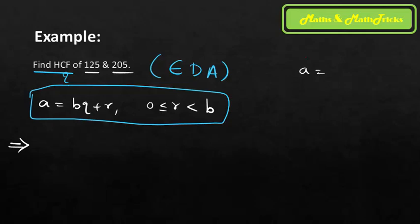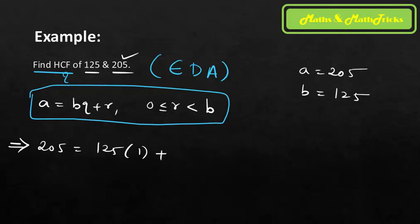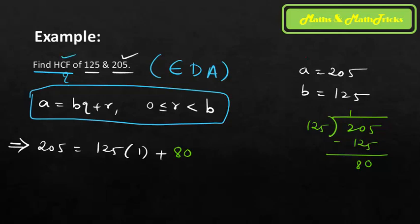Step 1: 205 = 125 × 1 + 80. I'm performing division: 125 ones are 125, so the remainder is 80. Now, is the remainder zero? No. So I carry forward the process: take 125 as the new dividend and 80 as the new divisor.